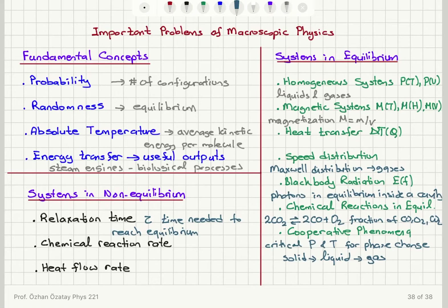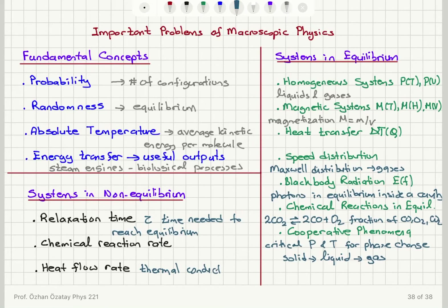If we start with some mixture of chemicals and look at the reaction of these chemicals, we're interested in the chemical reaction rate. Also, if we have thermal contact between a hot body and a cold body, we're interested in how long it takes for heat to flow from the hot body to the cold body to reach equilibrium — the thermal conduction process — and parameters like thermal conductivity are of interest. By using these statistical methods, we can tackle many important problems of macroscopic physics.